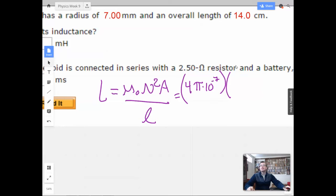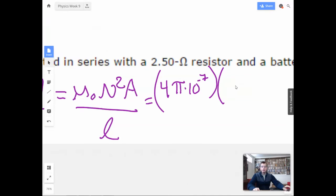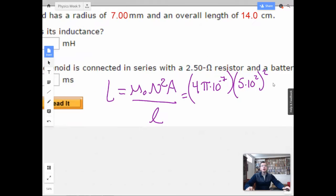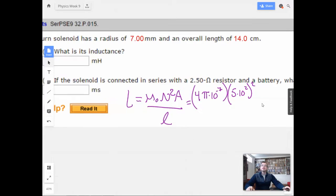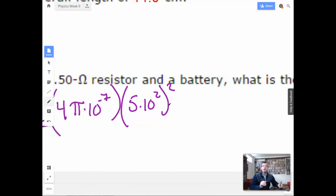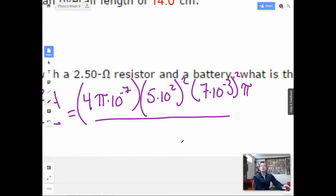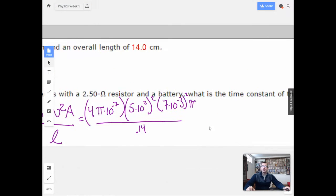So we had 500. 500 is the same as 5 times 10 squared, squared, and then area, which is pi r squared, radius of 7. So we'll do 7 times 10 to the negative 1, squared, times pi, all over the length of 14. So I'm going to call it 0.14. Let Wolfram do the hard work for me.